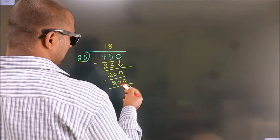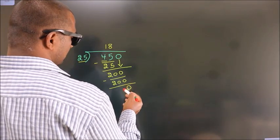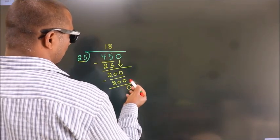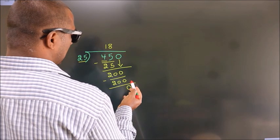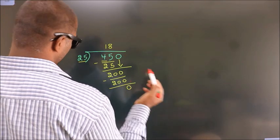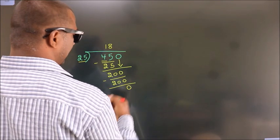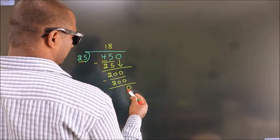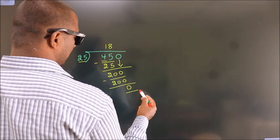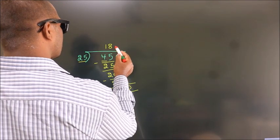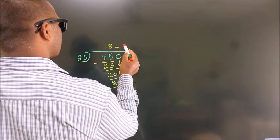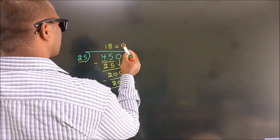After this, no more numbers to bring down. We got remainder 0. So this is our quotient. Here we go.